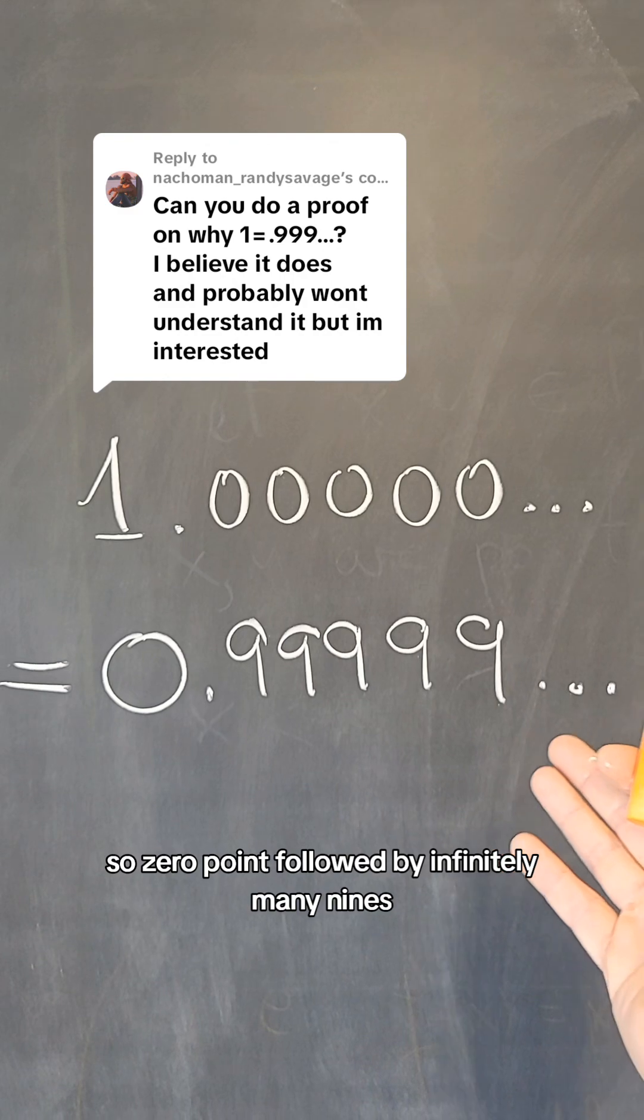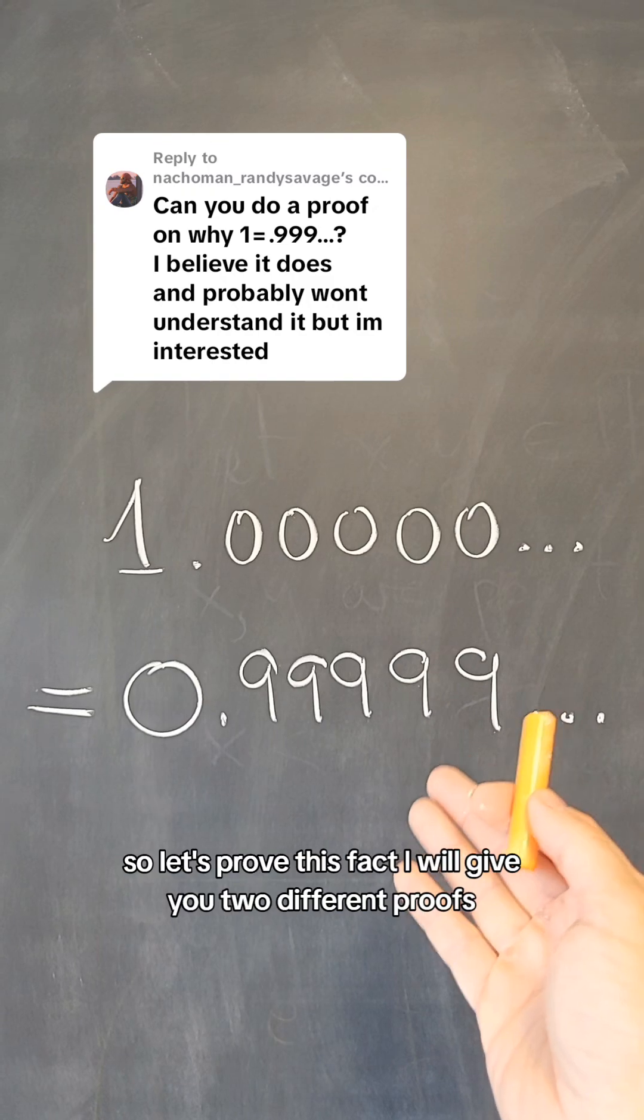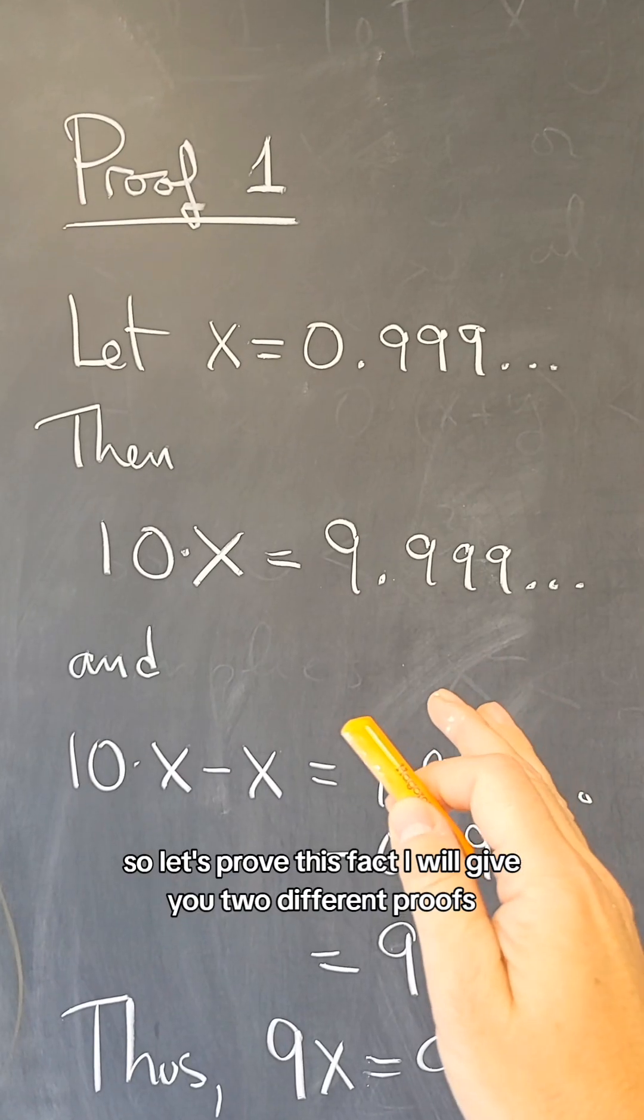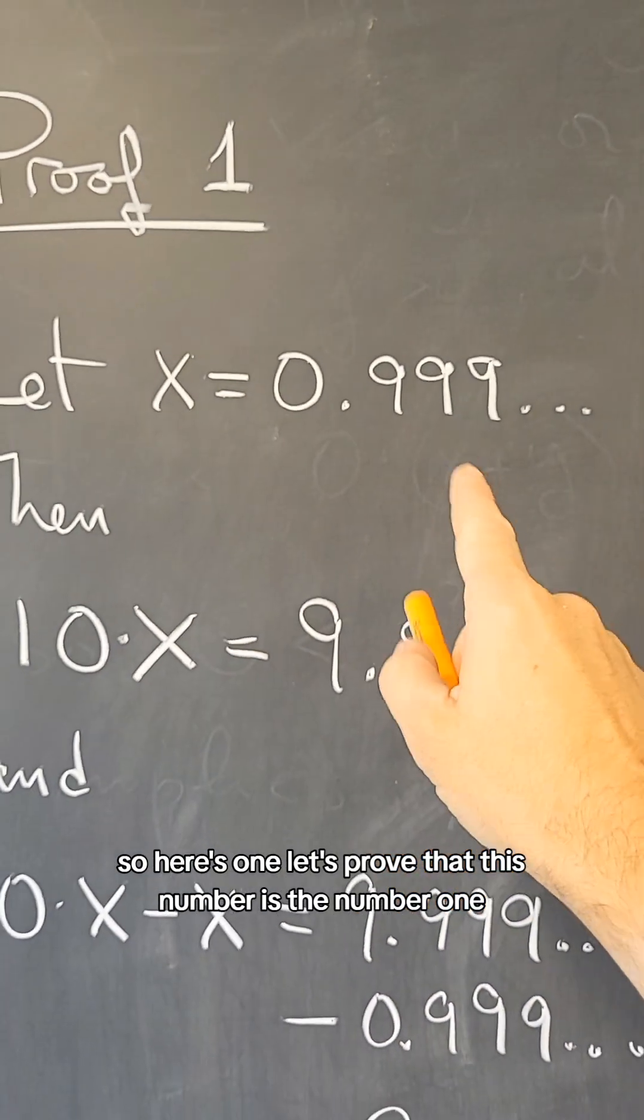So 0 followed by infinitely many nines, that is exactly the same as the number 1. So let's prove this fact. I will give you two different proofs. So here's one. Let's prove that this number is the number 1.